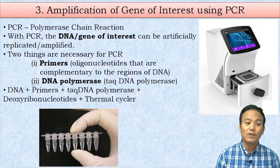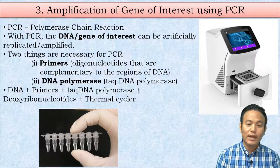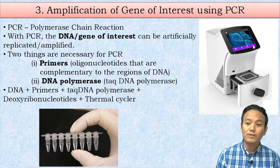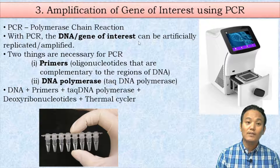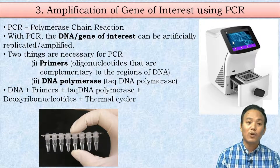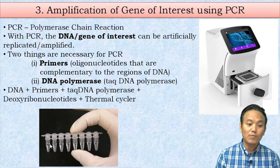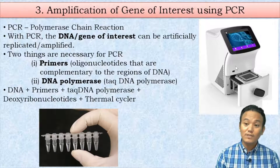We mix the DNA of interest along with the primers, Taq DNA polymerase, and deoxyribonucleotides, and place them in a thermal cycler. A thermal cycler is a machine in which we can set a sequence of temperatures and the number of cycles we want to carry out, depending upon how many copies of DNA we need. We load the mixture into the machine and it does the rest.